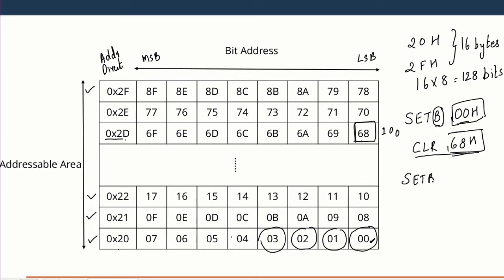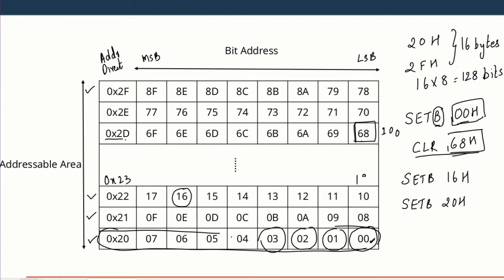Let us take another example. A random address I will pick is 16H. So when I say SET BIT 16H, this is the address that will be set — if it is 0, it will become 1; if it is 1, it will remain the same. Just to make this clear and avoid confusion: when I say SET BIT 20H, it does not mean address 20H and it does not set all the bits of that address. What it does is go to address 20H and set that particular bit — that bit will become 1.